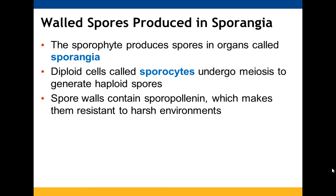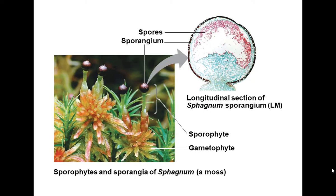The walled spores: the sporophyte produces spores in organs called sporangia. Diploid cells called sporocytes go through meiosis to produce haploid spores. The spore walls contain sporopollenin, which helps them survive in environments that aren't necessarily ideal. There's an example showing cross sections of spores and the sporangium.